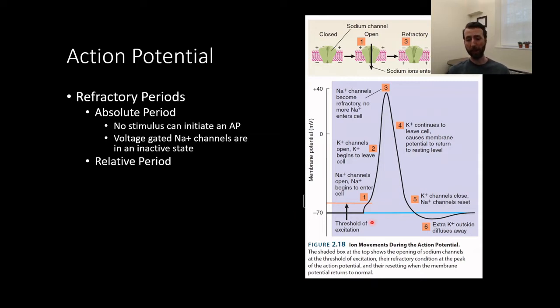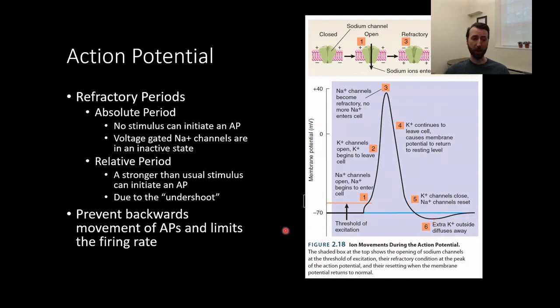Next is the relative refractory period, which is this undershoot right here. So after the sodium channels reset at 5, we have this undershoot where there is hyperpolarization relative to our resting potential. During this time, we can have an action potential, but we're going to need a little bit more juice to get there. Because we're starting from a more hyperpolarized state where you're more negative than normal, we're going to need a lot more EPSPs to get up to this threshold of excitation. So because of this undershoot, this is what we call the relative refractory period. You can have an action potential, but it's going to take a stronger than normal stimulus.